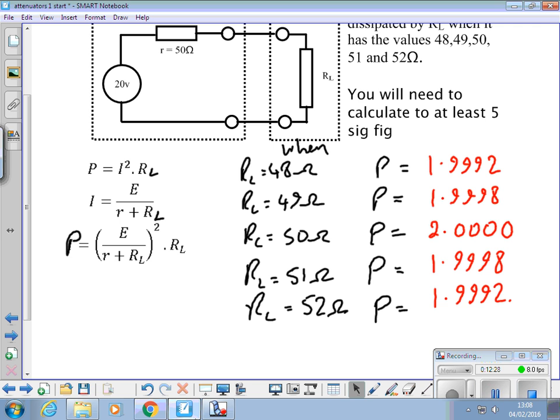So maximum power transfer is when we match the impedance of the source to the impedance of the load.